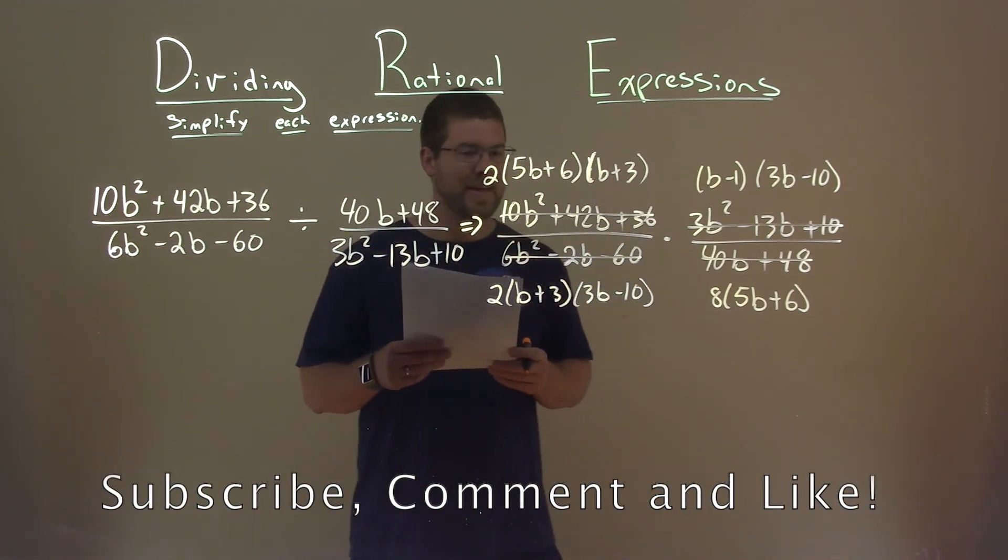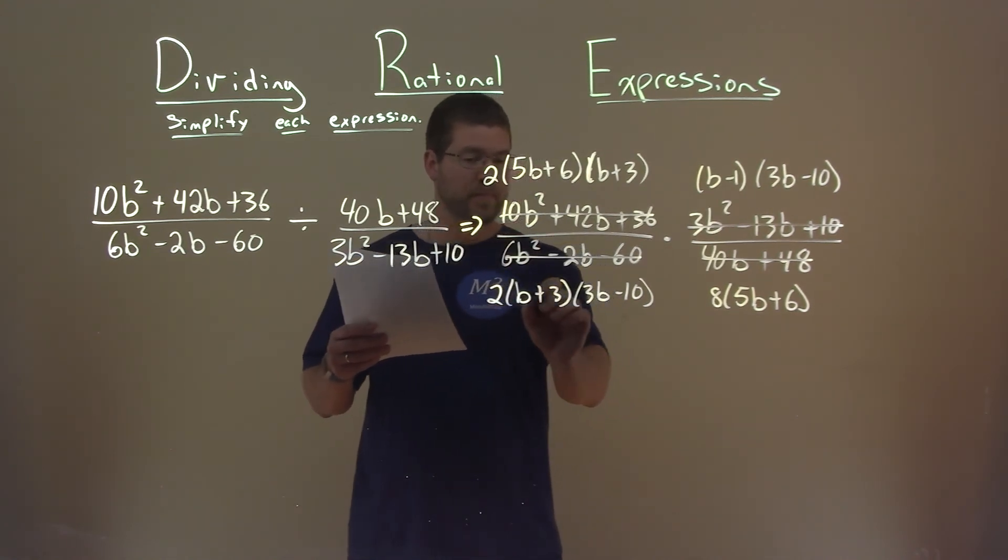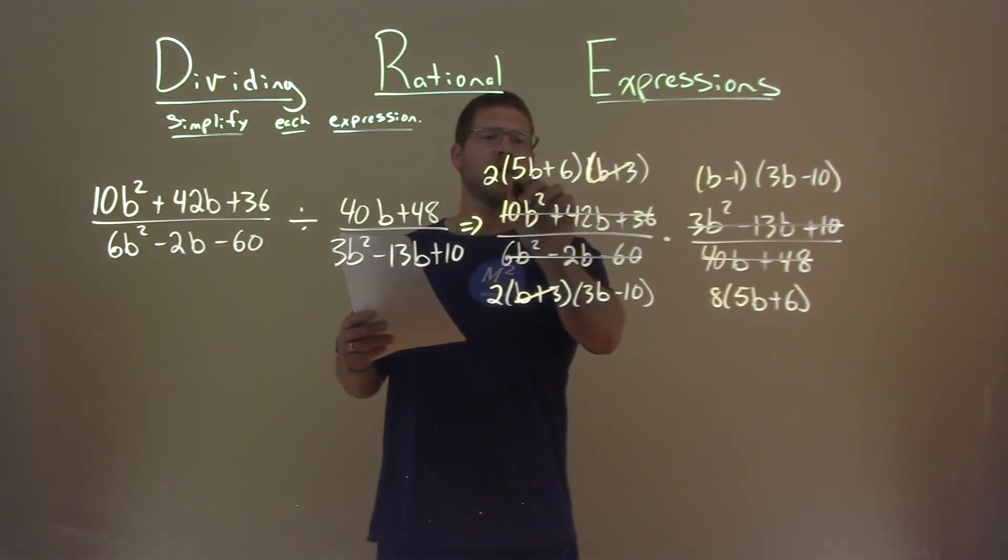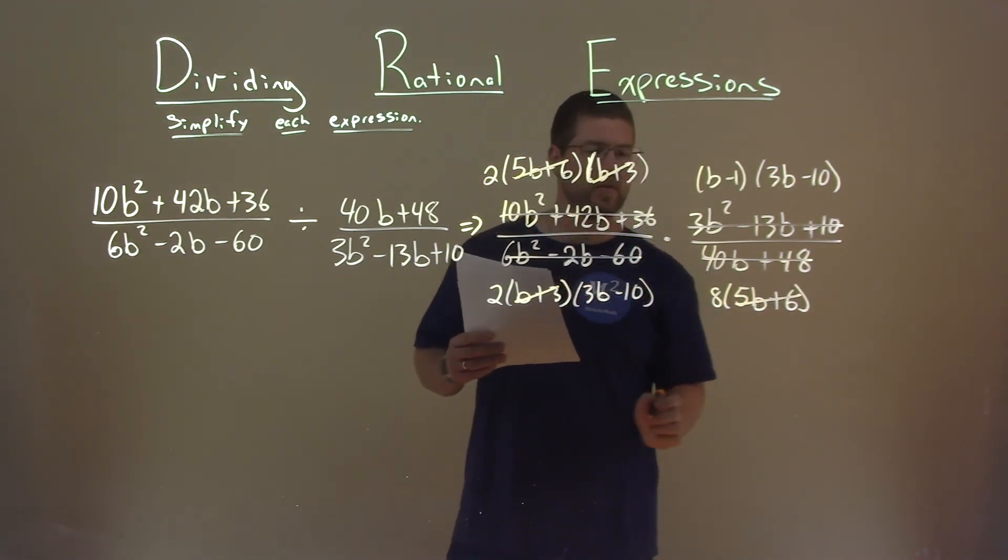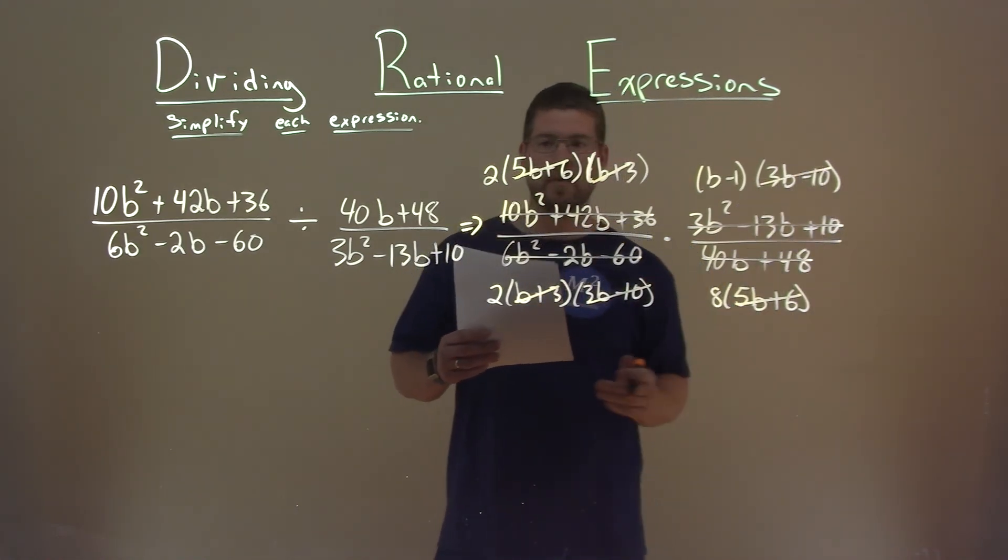This allows us to cancel some stuff out. So what do we have here to cancel? Well, I see b plus 3 and b plus 3 here cancels. 5b plus 6, 5b plus 6. 3b minus 10 and 3b minus 10.